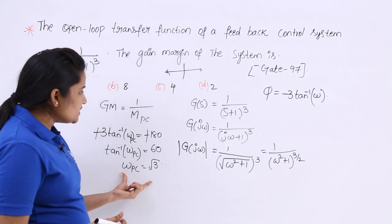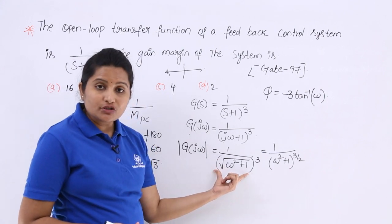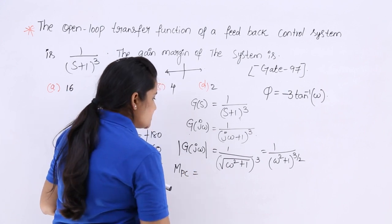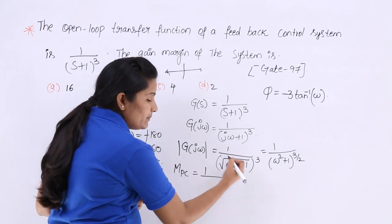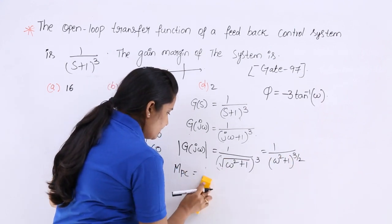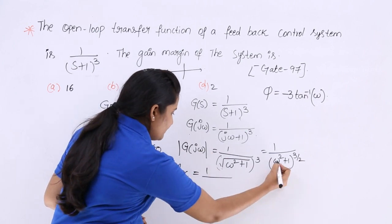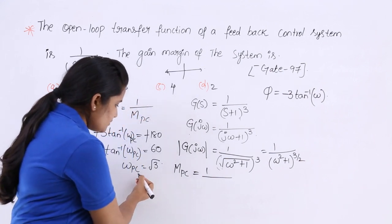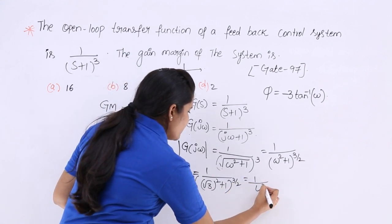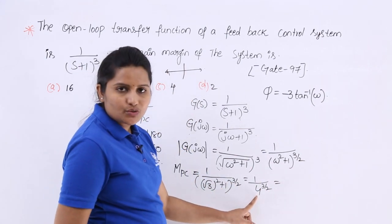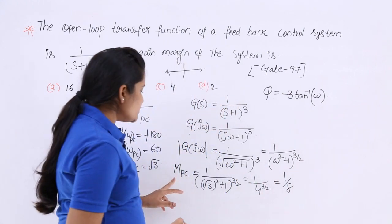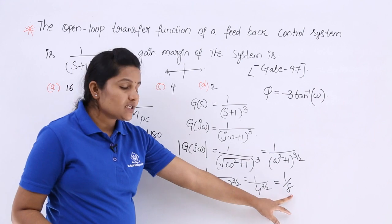Now substitute ωPC into the magnitude expression. The magnitude at phase crossover frequency = 1 by (ωPC² + 1)^(3/2). Substituting ωPC = √3: (√3)² + 1 = 3 + 1 = 4, so magnitude = 1 by 4^(3/2). Writing 4 as 2², we get 2² to the power 3/2 = 2³ = 8. So the magnitude at phase crossover frequency is 1/8.